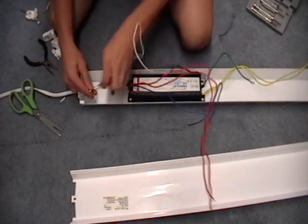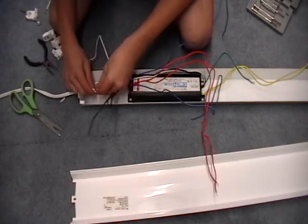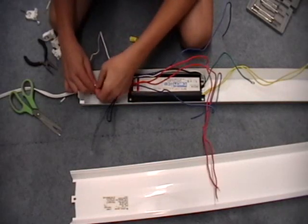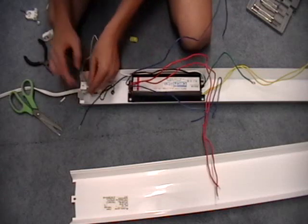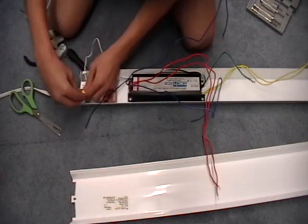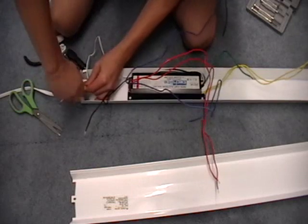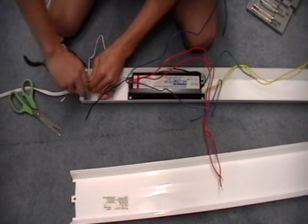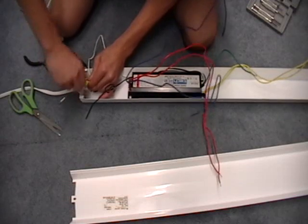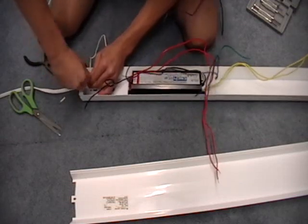These wires are kind of hard to work with sometimes. Pre-twisting is always recommended, but you don't have to do it. Put the nuts on. You want to make sure the nuts are tight. You don't want the nuts to fall off.